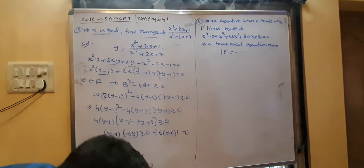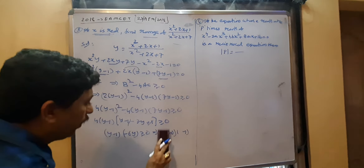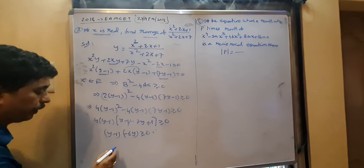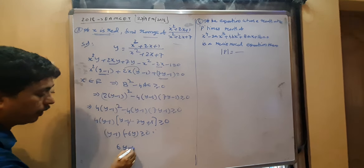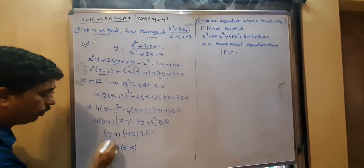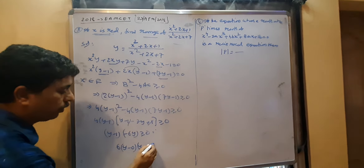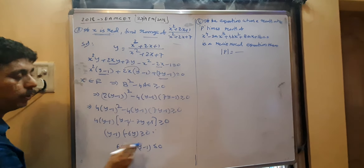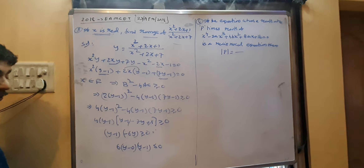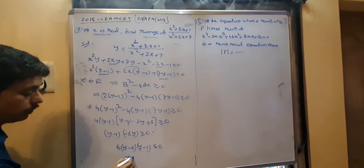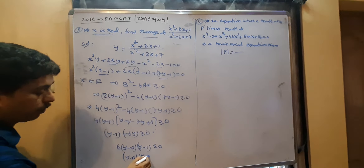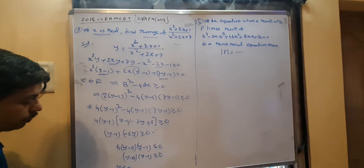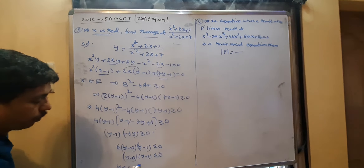Multiplying by minus, greater than changes to less than equal to. 6y(y−1) ≤ 0, which can be written as y(y−1) ≤ 0, meaning y(y−0)(y−1) ≤ 0. So y belongs to the closed interval [0, 1].